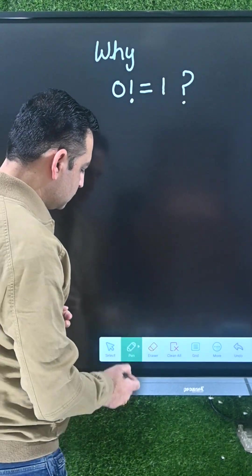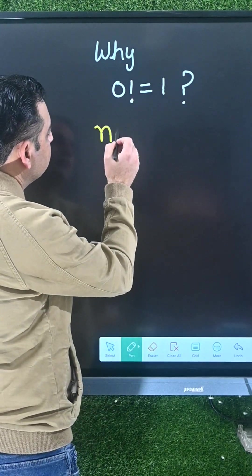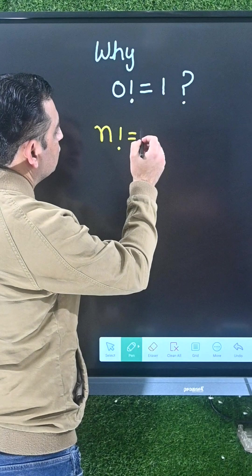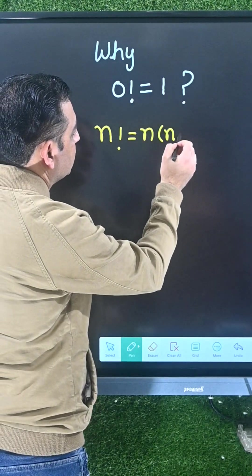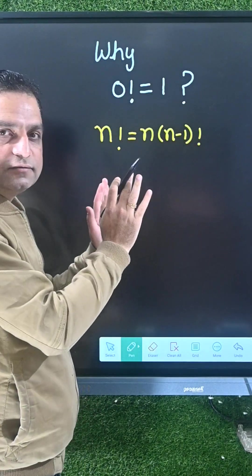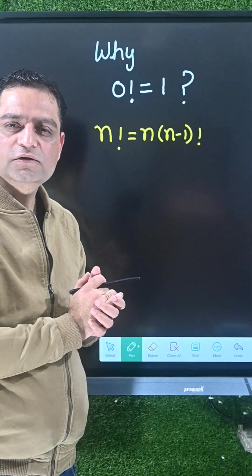We know that n factorial is equal to n times (n-1) factorial. This is the simple formula which we use.